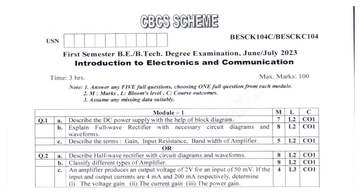Explain full wave rectifier with necessary circuit diagrams and waveforms. You will first give a definition of full wave rectifier, then draw the circuit diagram and the required waveforms — this carries eight marks. Next, describe the terms gain, input resistance, and bandwidth of an amplifier. Describing each term with its particular equation carries five marks.